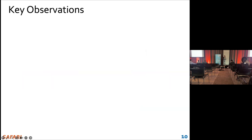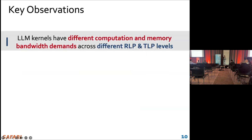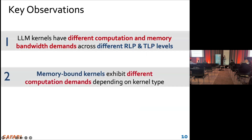I summarize our key observations. First, LLM kernels have different computation and memory bandwidth demands across RLP and TLP levels. And next, memory-bound kernels exhibit different computation demands depending on the kernel type.